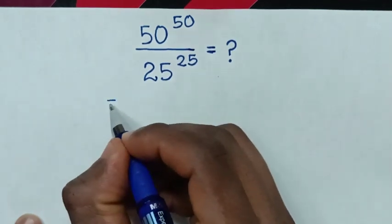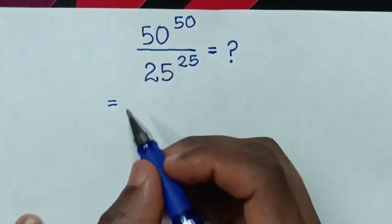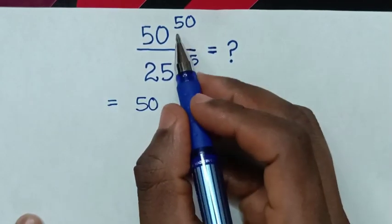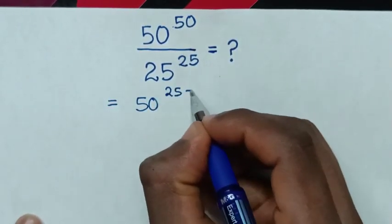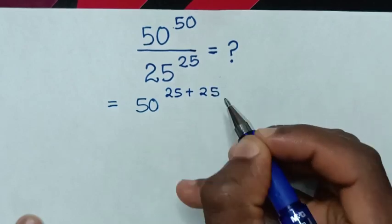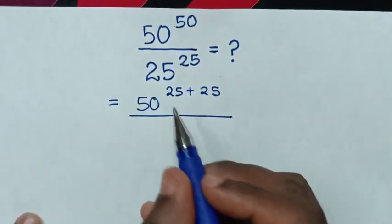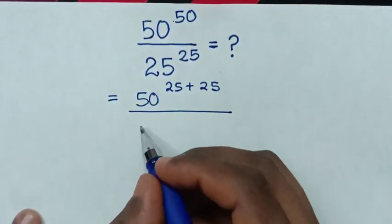So it will be equal to: from this base of 50 power of 50, since 50 is the same as 25 plus 25, we rewrite it as 50 power of (25 plus 25), then over 25 power of 25.